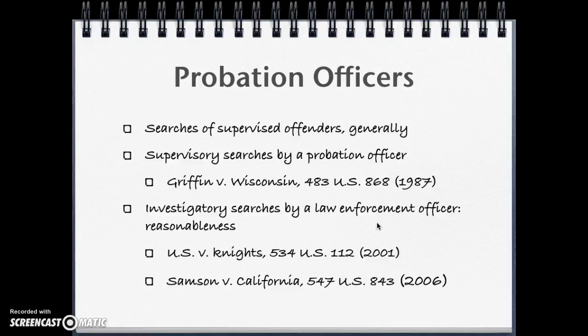In United States v. Knights, as part of a criminal investigation, a law enforcement officer searched the home of a man he knew to be on probation. The officer also knew the probationer was subject to a search condition requiring him to submit to searches 'at any time, with or without a search warrant or arrest warrant, or reasonable cause, by any probation officer or law enforcement officer.' The officer found evidence related to the criminal investigation, which the probationer then sought to suppress. He argued the warrantless search was improper under Griffin because it was for investigatory rather than supervisory purposes.